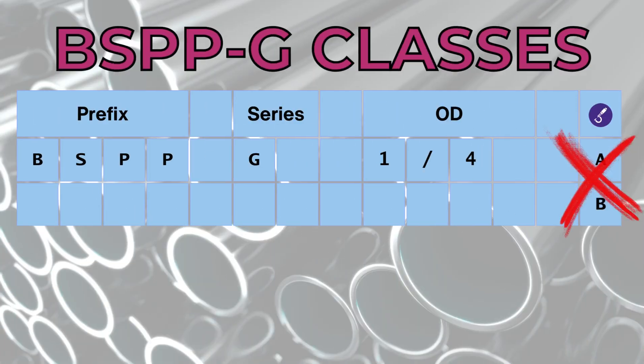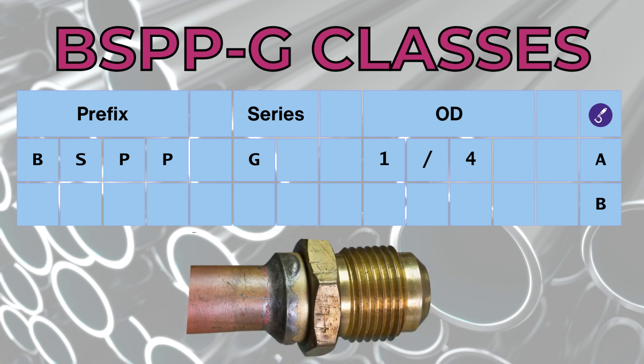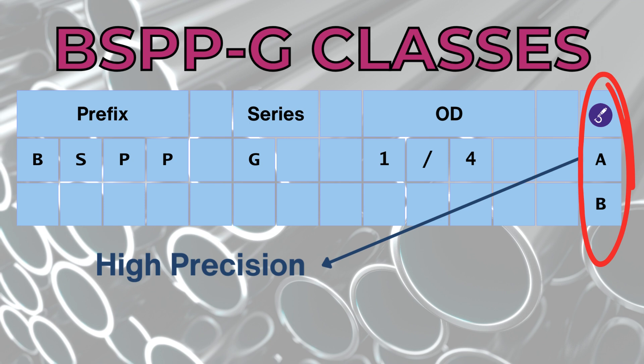If no class is indicated, we are designating an internal thread. If a class is indicated, it means we are referring to an external thread. In such a case, there are two options: Class A indicates an external high precision thread, and Class B a low precision thread. The tolerance field of Class B is twice that of Class A.